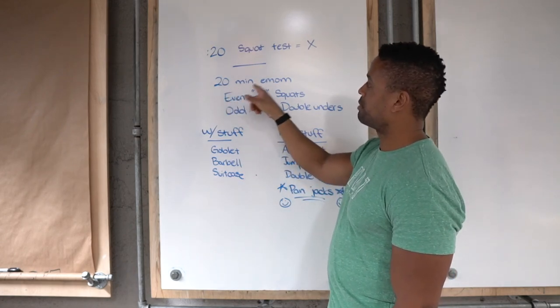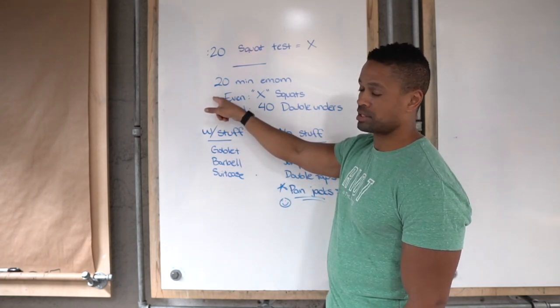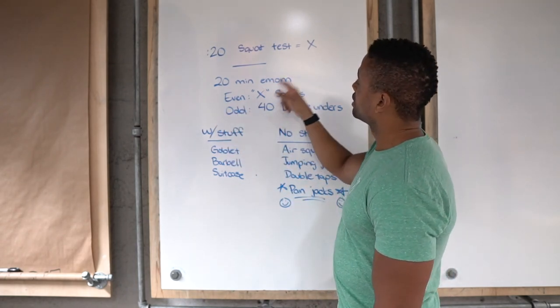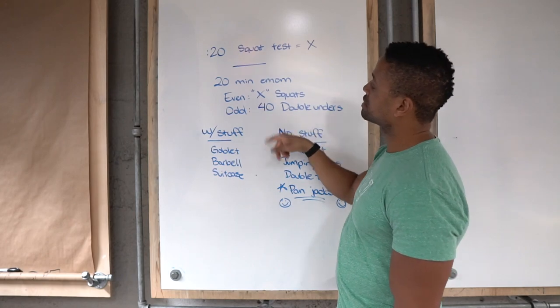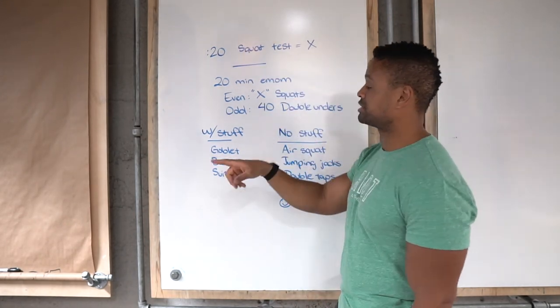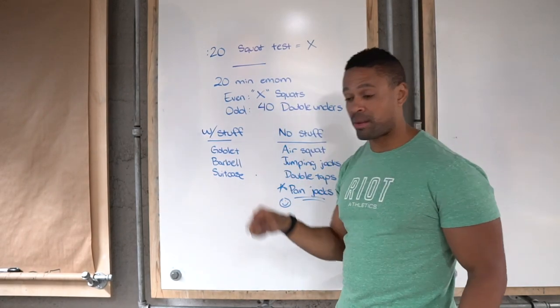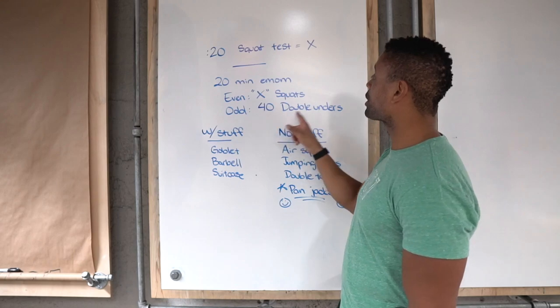And so it's a 20-minute EMOM. Every minute on the minute, you're going to do either squats or double-unders. In the even minutes, which includes minute zero, X squats, whatever you got in that test, and the odd minute, you're going to rest the remainder. Let's say you've got 20 squats in 20 seconds. Start the clock, 20 squats. Then, when that minute's complete, next minute you're going to do 40 double-unders.